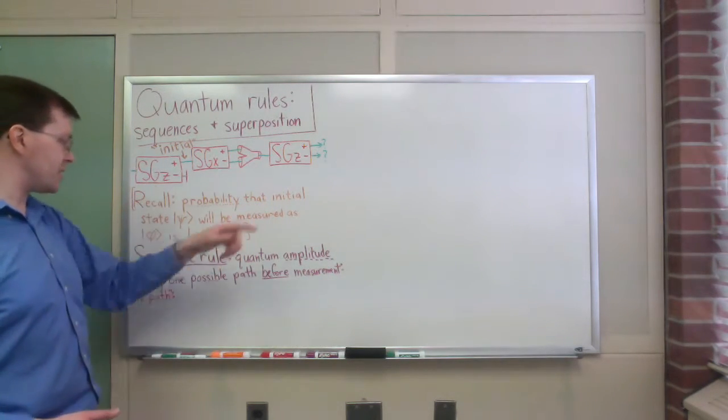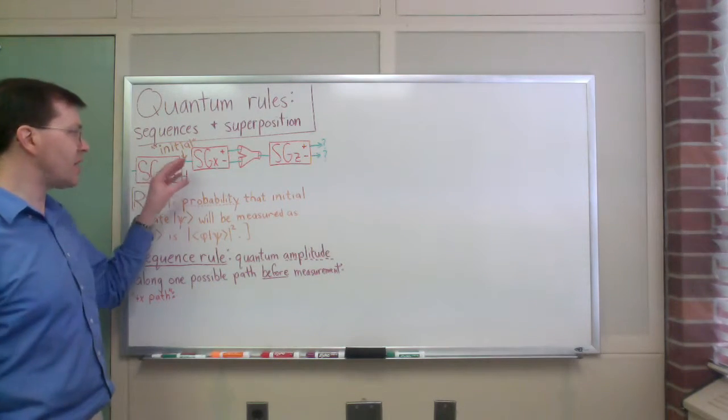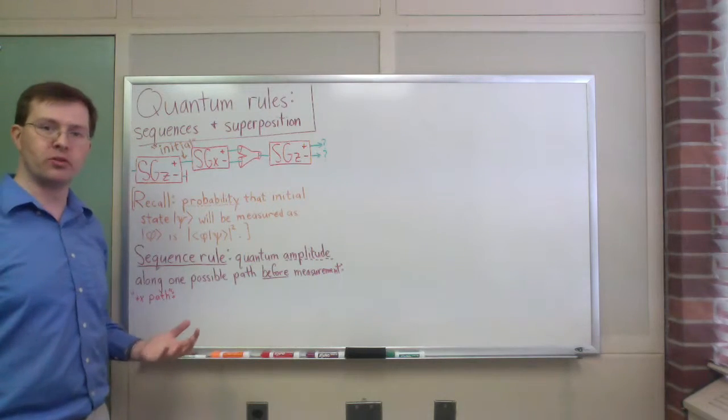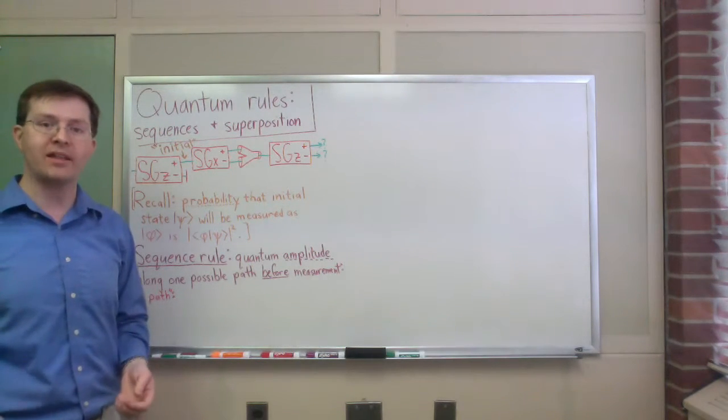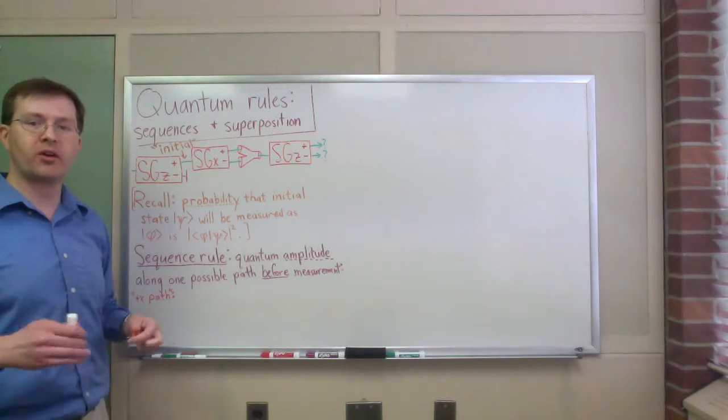So I want to look at this and see how I can apply the quantum sequence rule, how I take a sequence of steps along some path to build the quantum amplitude corresponding to one of several paths that my particle could take. So just for instance, I'm going to start with what I might call the plus x path.